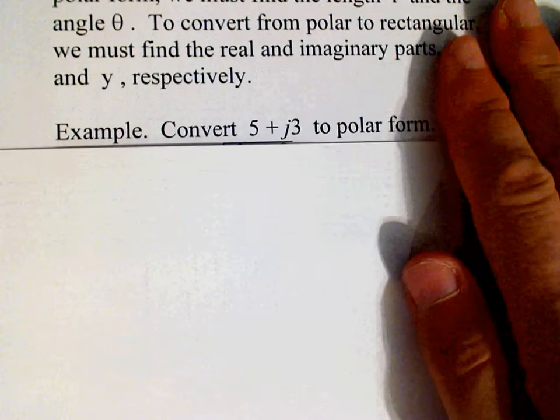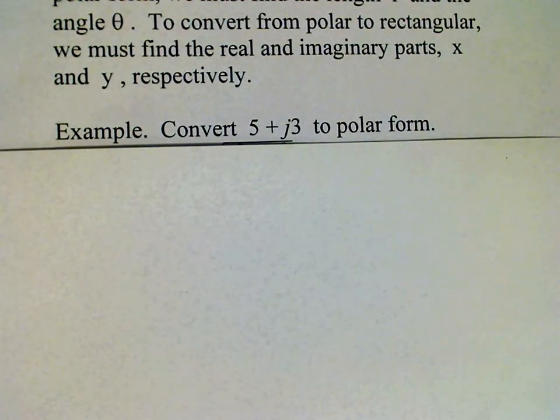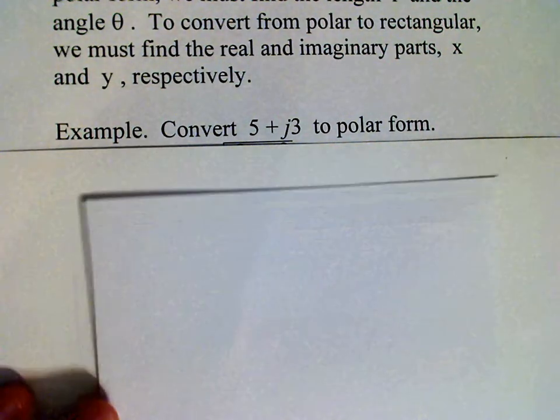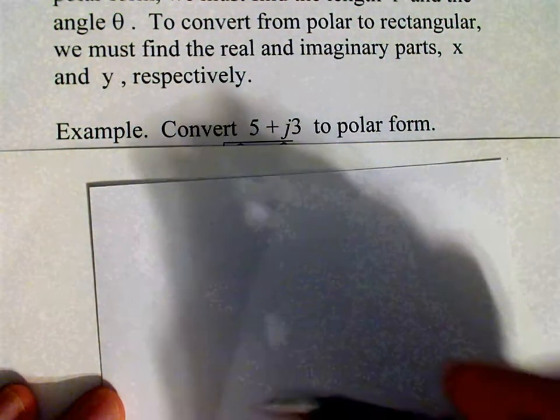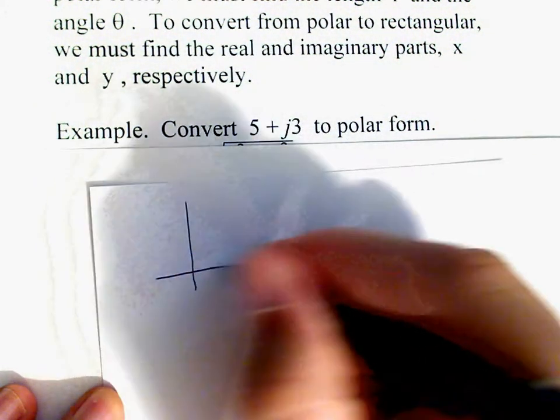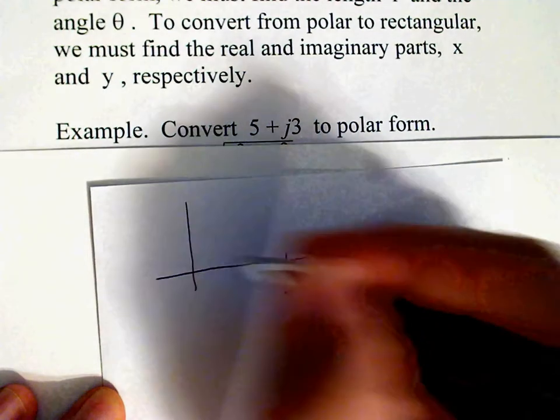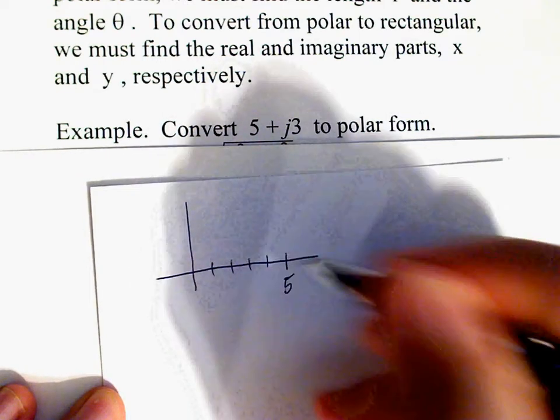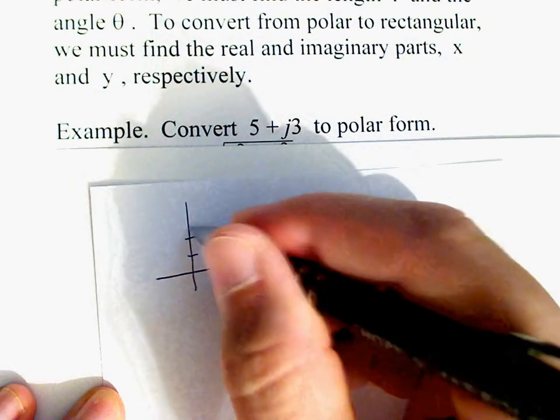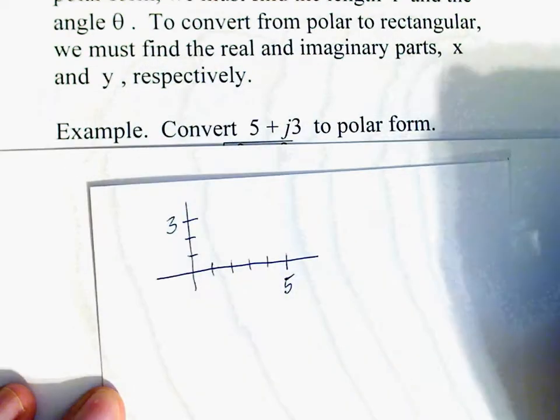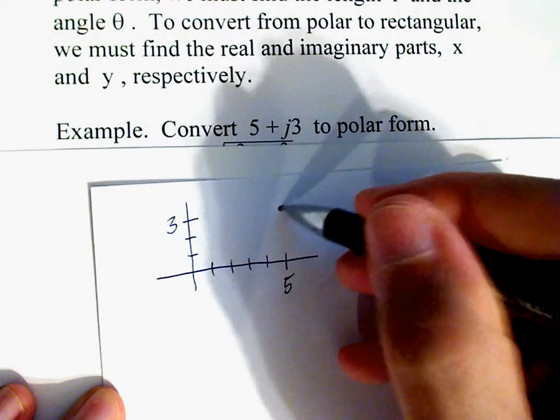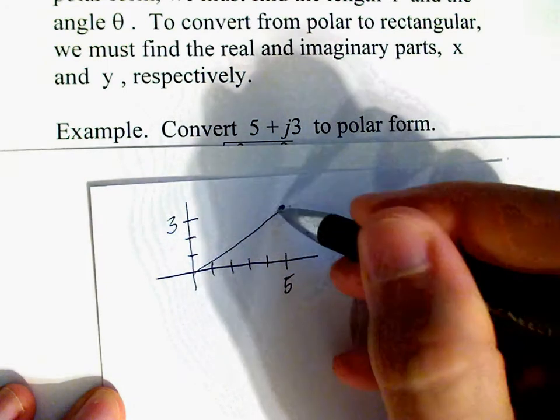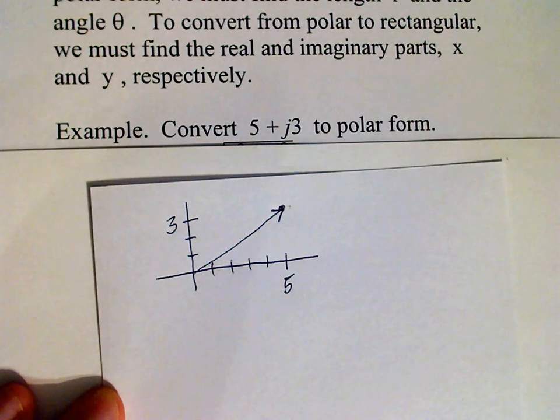Let's do another example now. We have to convert 5 + j3 to polar form. So this time we have 5 and 3, and there's our phasor.